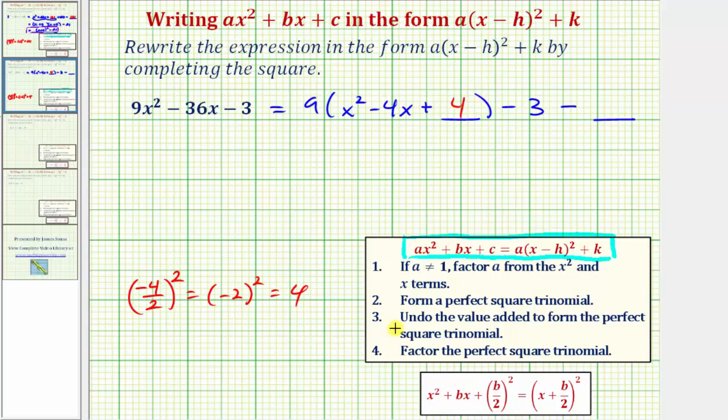But now step three, we're going to undo the value added to form the perfect square trinomial. Notice how by adding four here, because of the distribution, we're really adding nine times four, 36. So to undo positive 36, we'll have to subtract 36 here.